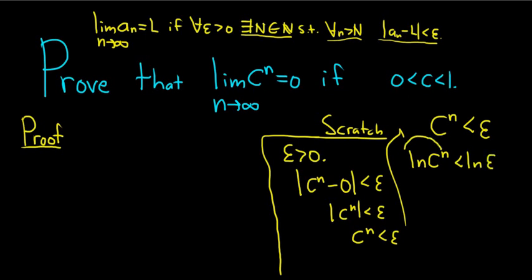And then that allows us to bring the n downstairs so we have n times the natural log of c is less than the natural log of epsilon. And here's the interesting part: when we divide both sides by the natural log of c we do have to reverse the inequality sign. And the reason is that c is a number strictly between 0 and 1.